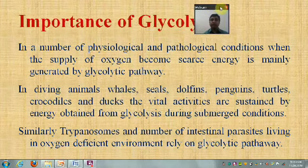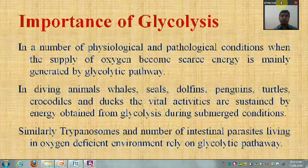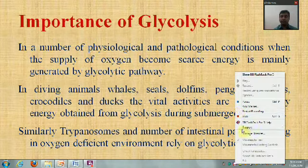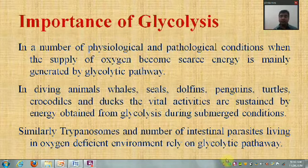The importance of glycolysis: in a number of physiological or pathological conditions where the supply of oxygen is low, it is the main way of energy generation. For example, in diving animals such as whales, seals, and dolphins, energy is obtained through glycolysis in submerged conditions. Similarly, all parasites use this pathway when they are in an oxygen-deficient environment.